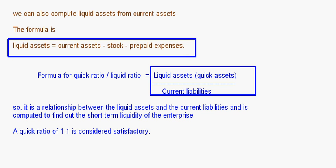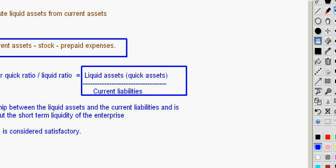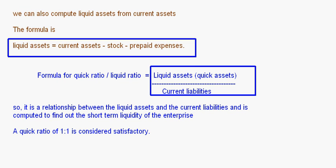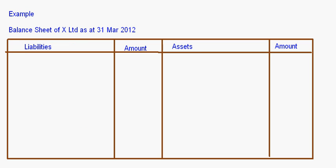The ideal ratio for the liquidity ratio is 1:1. If the company has a 1:1 quick ratio, we say that the short term financial position of the company is satisfactory. Now let's take up a small example.